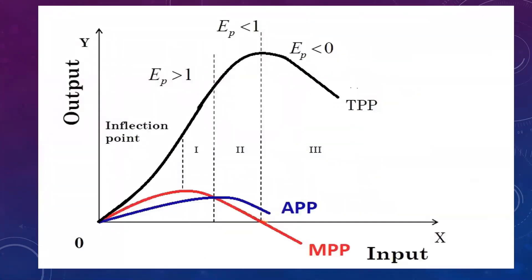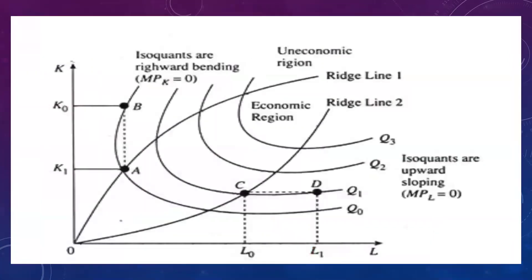Again from the classical production function: elasticity of production — in stage one it is greater than one, in stage two it is less than one, in stage three it is less than zero. Any of these can be asked. The next one is ridge lines — what are ridge lines, what happens on the ridge line, which is the economic region, and at which point on the ridge line the marginal product is zero. Revise all of this today.